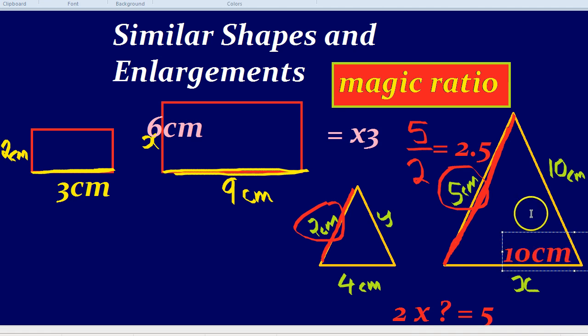Slightly harder. This time, we've got to get y. We've got the bigger side, and we want to find the smaller side. So instead of timesing, we're going to have to divide by the magic ratio.